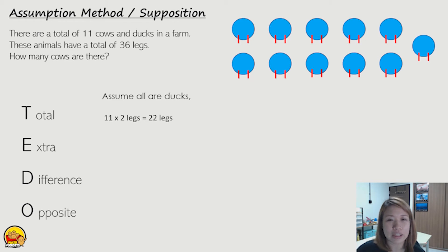Okay, so the next step is to find the extra. Now do you see in the question they tell us there are a total of 36 legs? So we have already given out 22 legs. How many extra legs are there? 36 legs, the total legs, right? Take away the 22 legs that we have already given away, we're left with 14 legs.